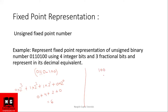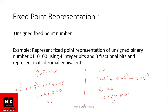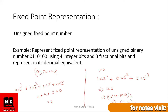Now we solve the decimal part separately. This bit is one, so: one times two to the power minus one, plus zero times two to the power minus two, plus zero times two to the power minus three. Two to the power minus one is 0.5, so we get 0.5. The complete conversion of 0110.100 in binary gives the decimal equivalent of 6.5 in base 10.